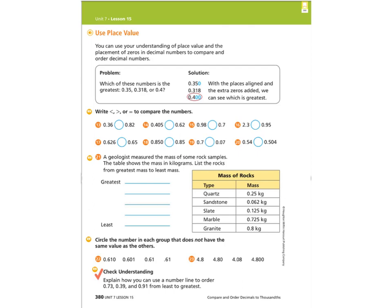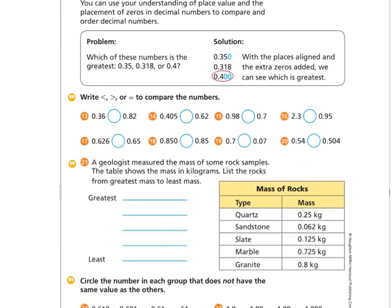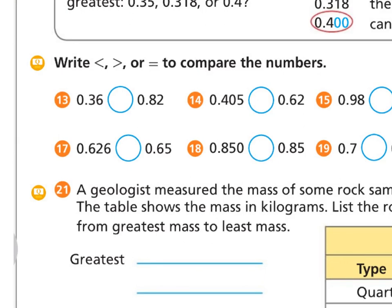Our next page uses the greater than and less than symbols to compare our numbers. I will do two examples with you, and you'll need to finish after the video. Let's look at number thirteen. First, we're going to look at the whole number — zero and zero, same. Then I'm just going to look at my tenths spot: eight is bigger than three. So thirty-six hundredths is less than eighty-two hundredths.